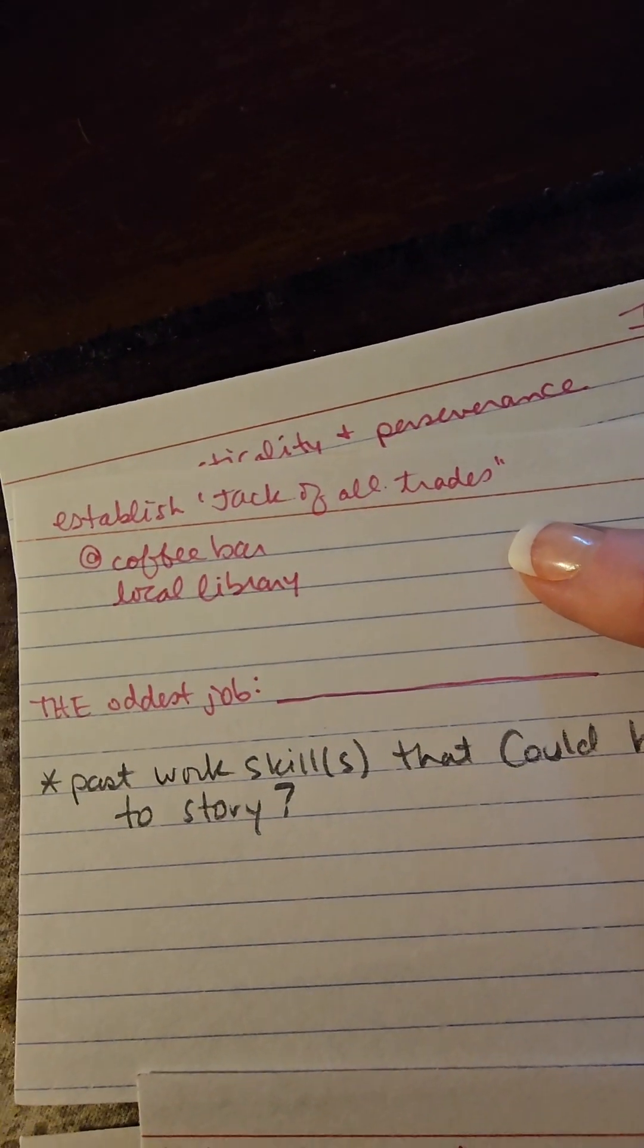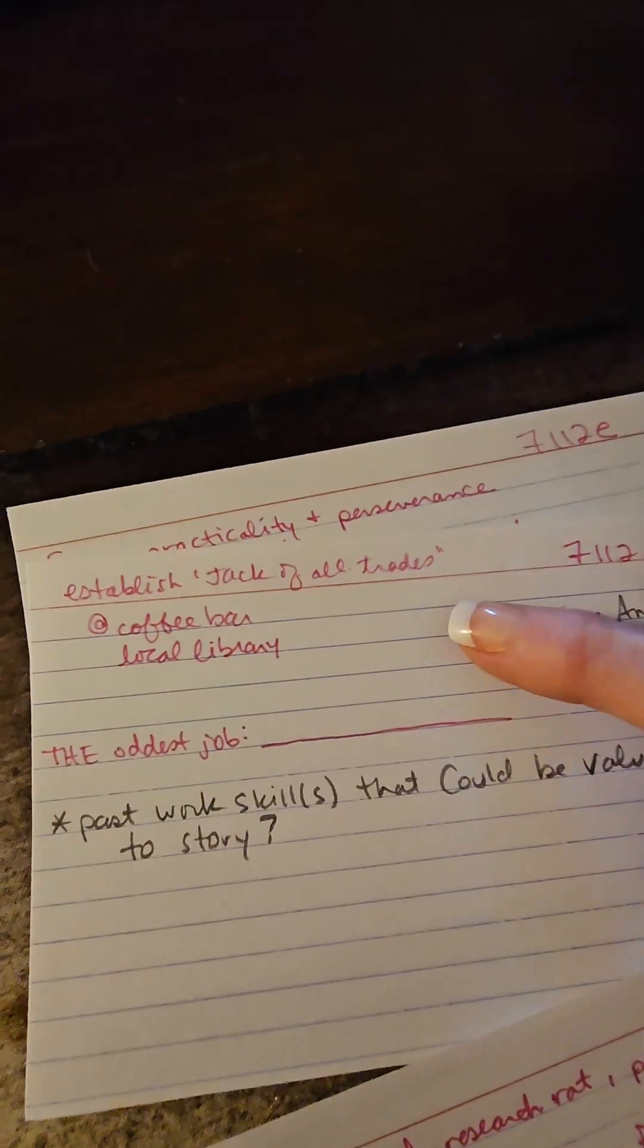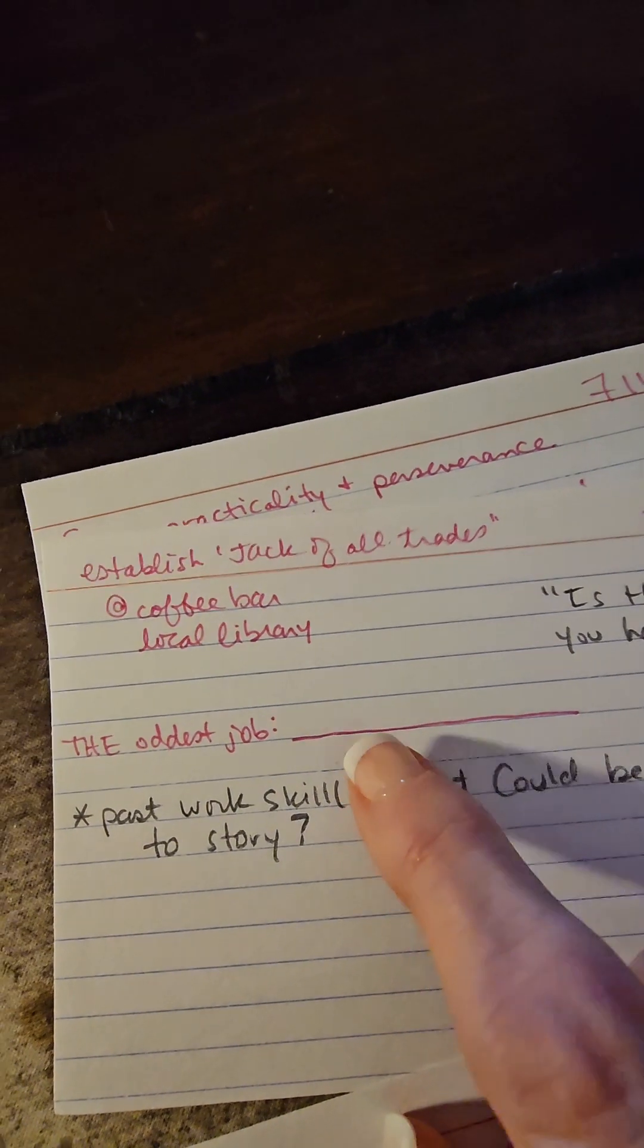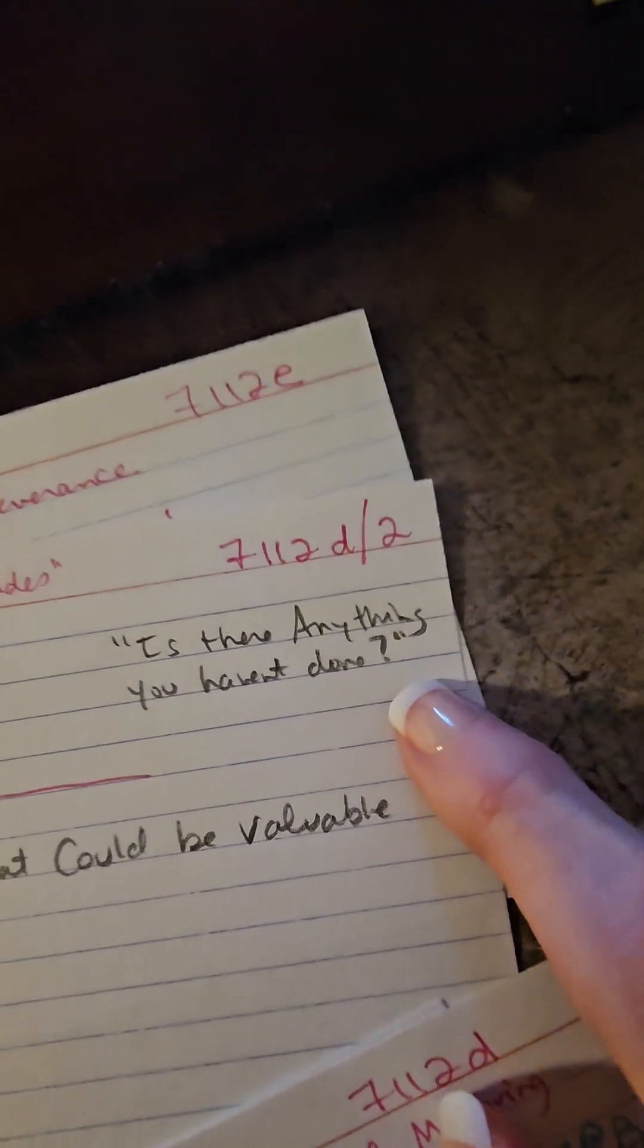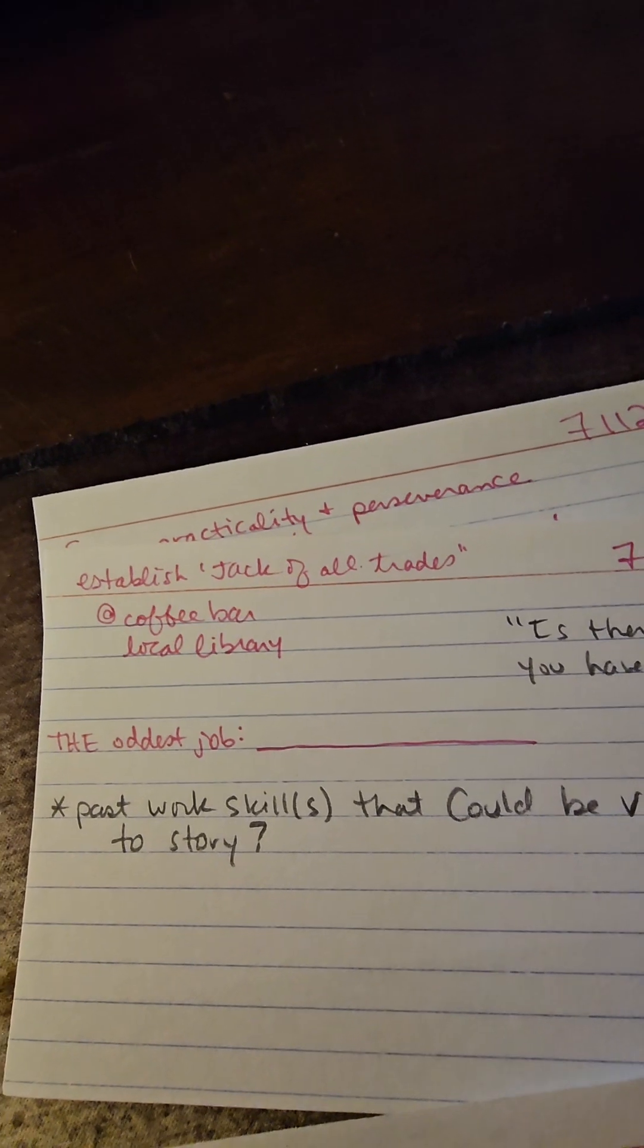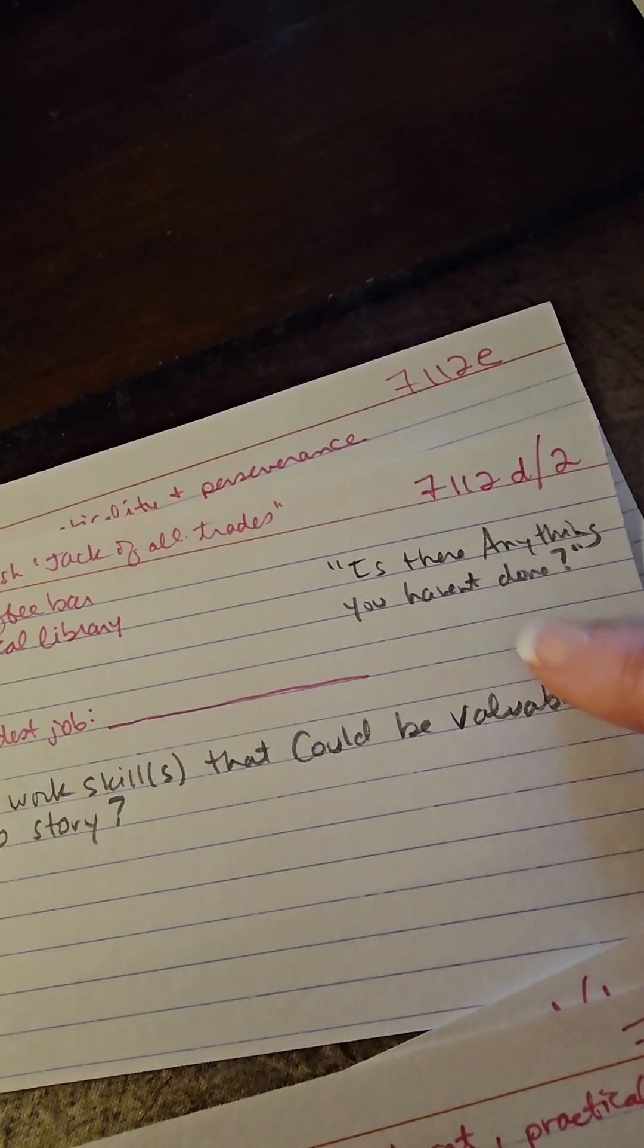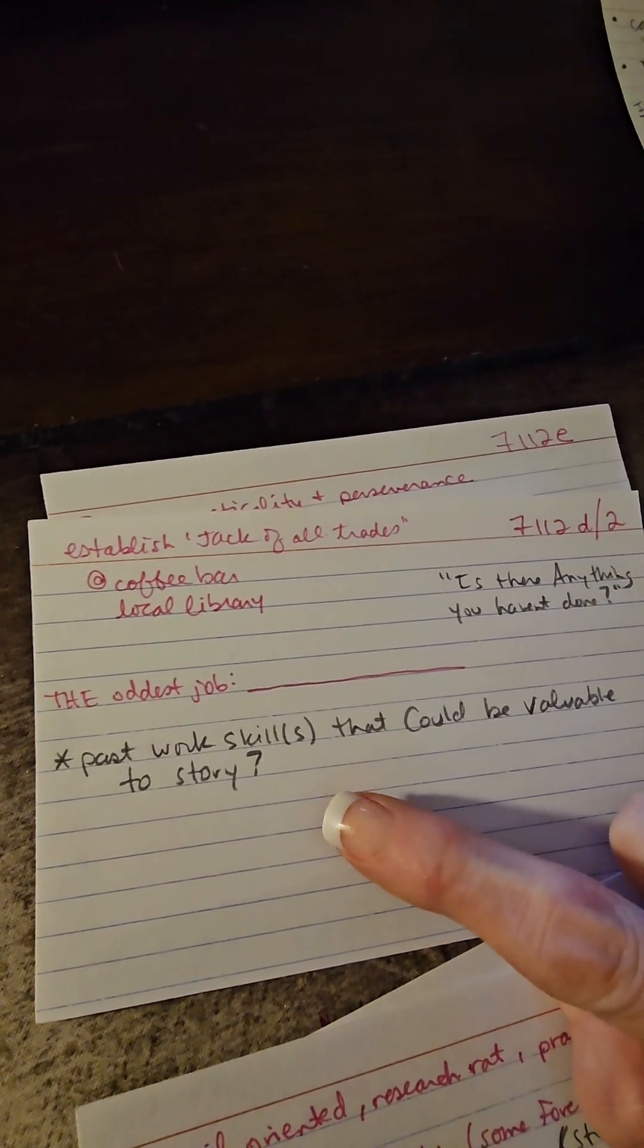Establish that he's a jack of all trades, so this answers that question about past jobs, and I've told myself it's the slash two card. So what did he do? He worked in a coffee bar, he worked in a library. What is the oddest job? I've made a line because I haven't figured that out yet, but a piece of dialogue popped into my head when I wrote that: 'Is there anything you haven't done?' So this is how filling out your character cards in detail can often lead you to bits of conversation or scraps that you can use in other parts of the story. Last note is his past work skills that could be valuable for the story, so what has he done that I might be able to use?